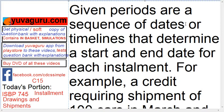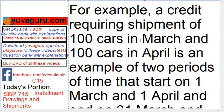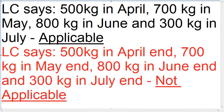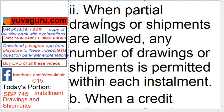The important part: 'given periods' are the sequence of dates or timelines that determine the start date and end date for each installment. Remember, both a start date and end date must be present for installment shipments. For example, a credit requiring shipment of 100 cars in March and 100 in April represents two periods starting on 1st March and 1st April, ending on 31st March and 30th April respectively.